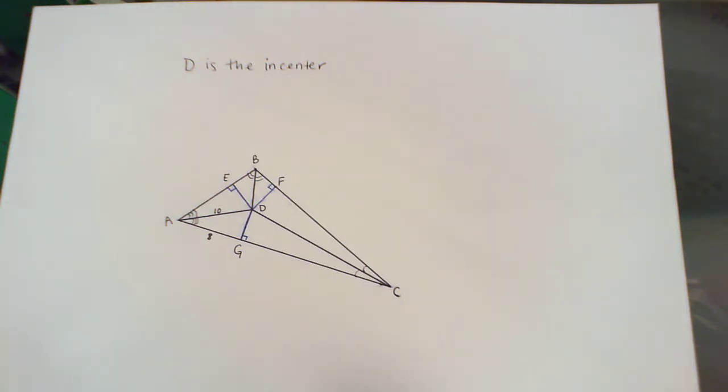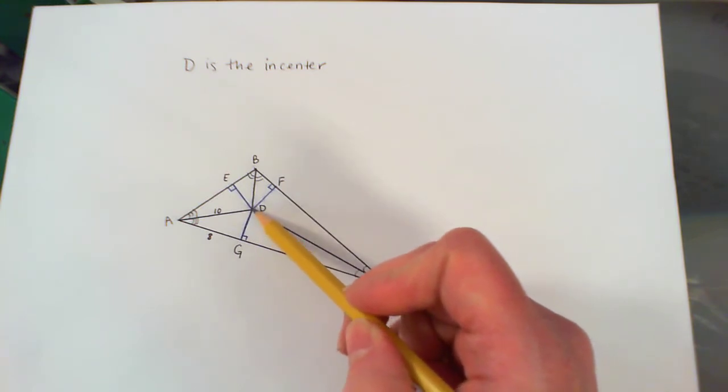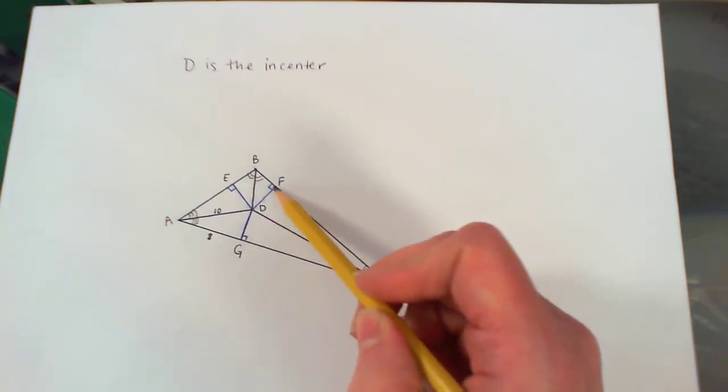The in-center has the known property of also being equidistant to the sides. So from D to F is the same distance as from D to E, and is also the same distance as D to G. There are little perpendicular markings,